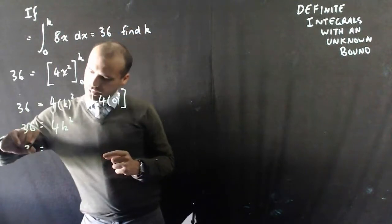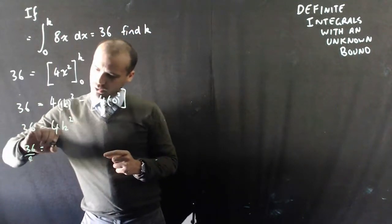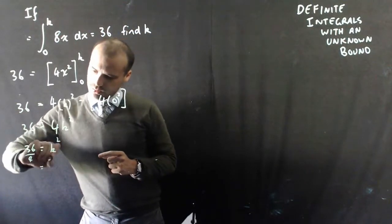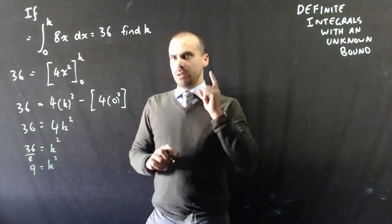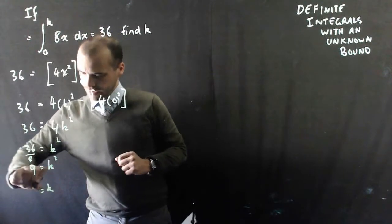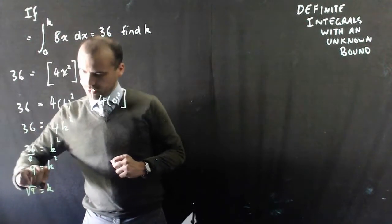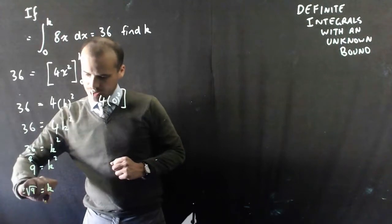Which means that 36 divided by 4 equals k squared, which means that k squared equals 9. That means that k equals the square root of 9 plus or minus.